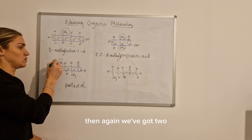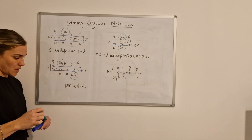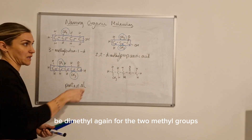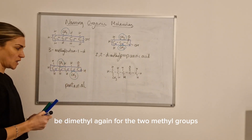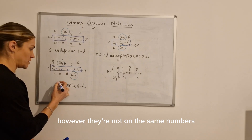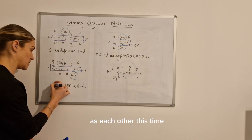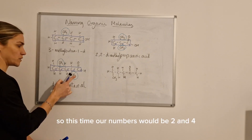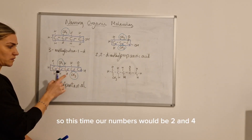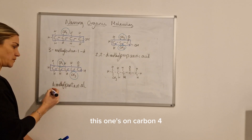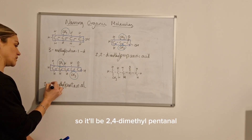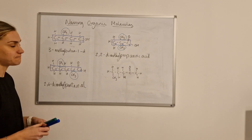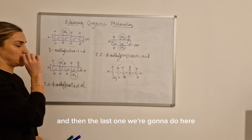We number the carbon chain from the end closest to the functional group: one, two, three, four, five. We've got two methyl groups again, so it's dimethyl, however this time they are not on the same carbon numbers as each other. This one is on carbon two and this one is on carbon four, so it would be 2,4-dimethylpentanal.